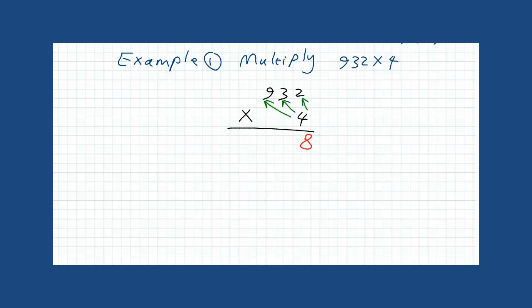4 times 3 is 12. We put 2 and we have 1 in the hand. 4 times 9 is 36. Plus 1, it is 37. And our final answer is 3728.